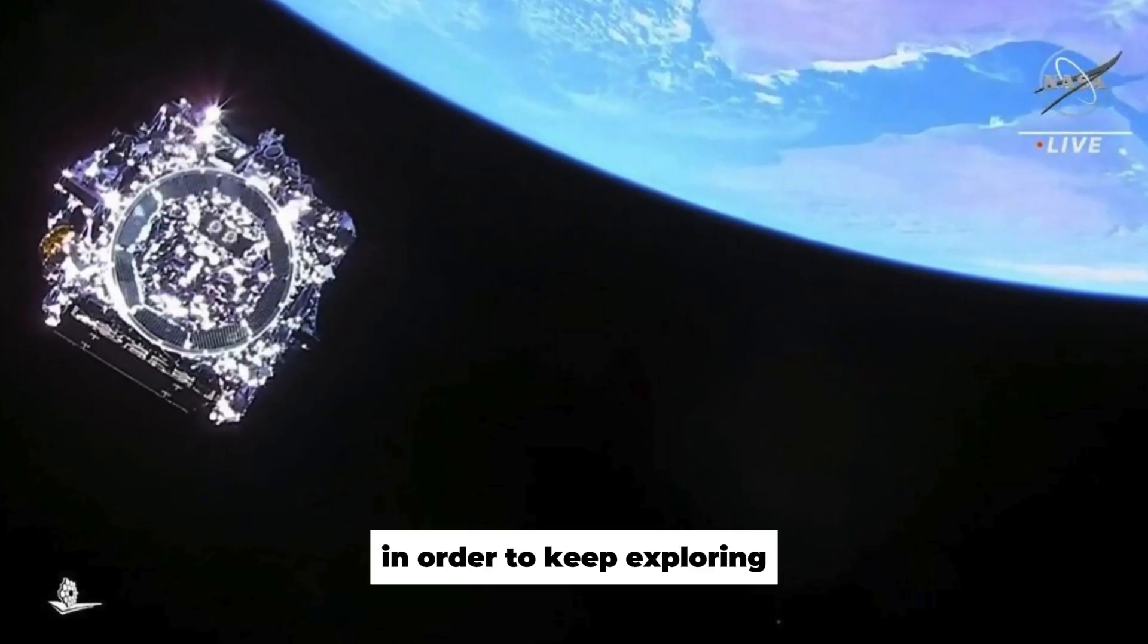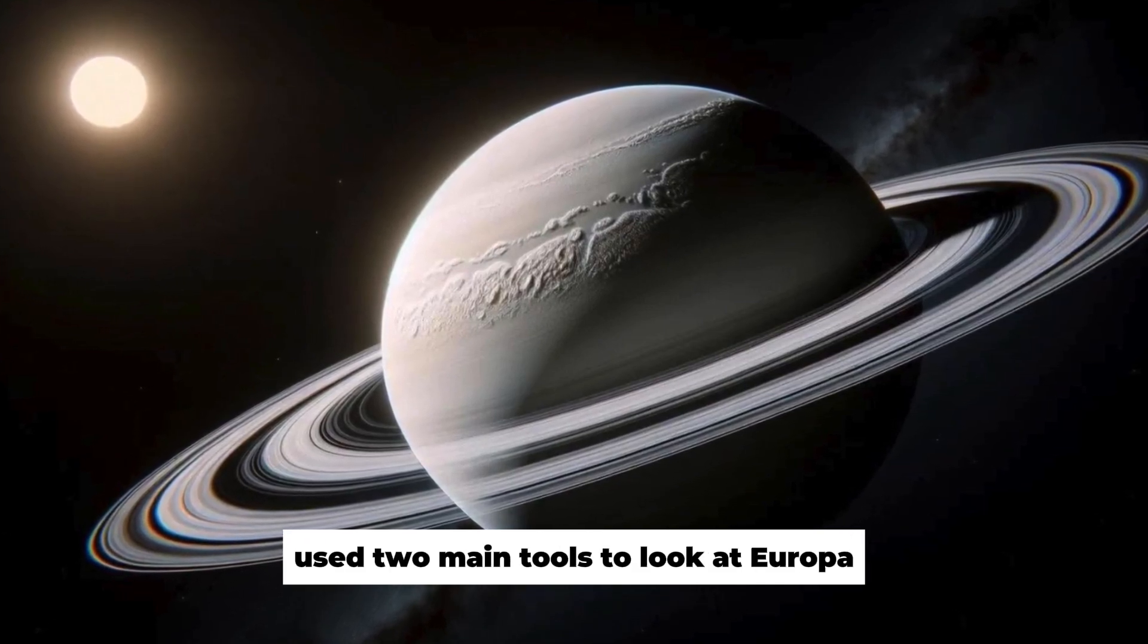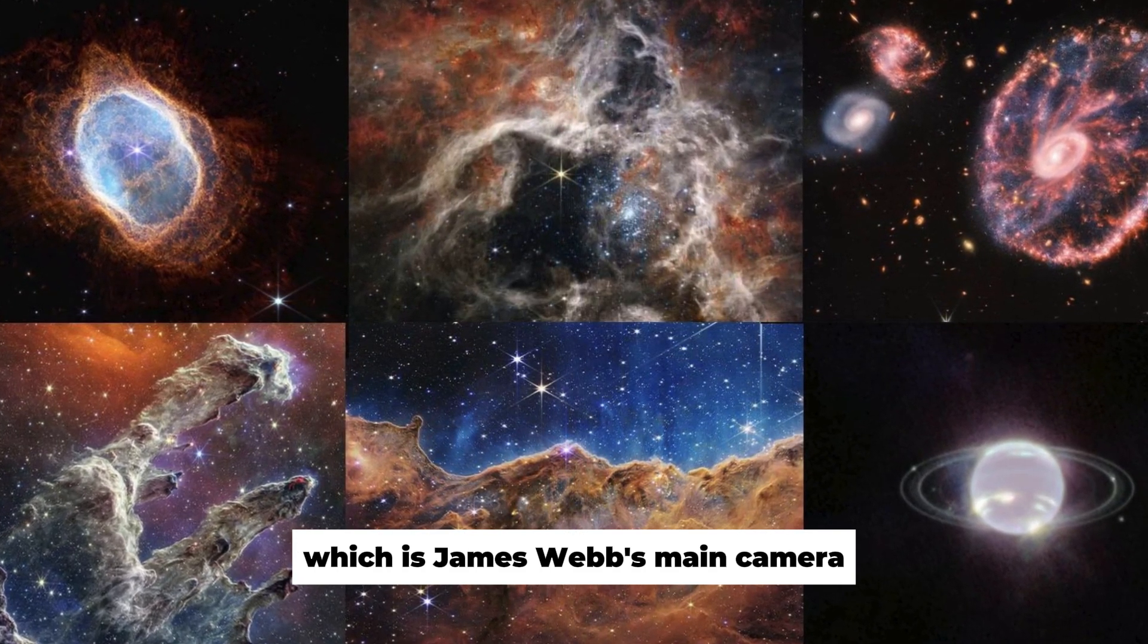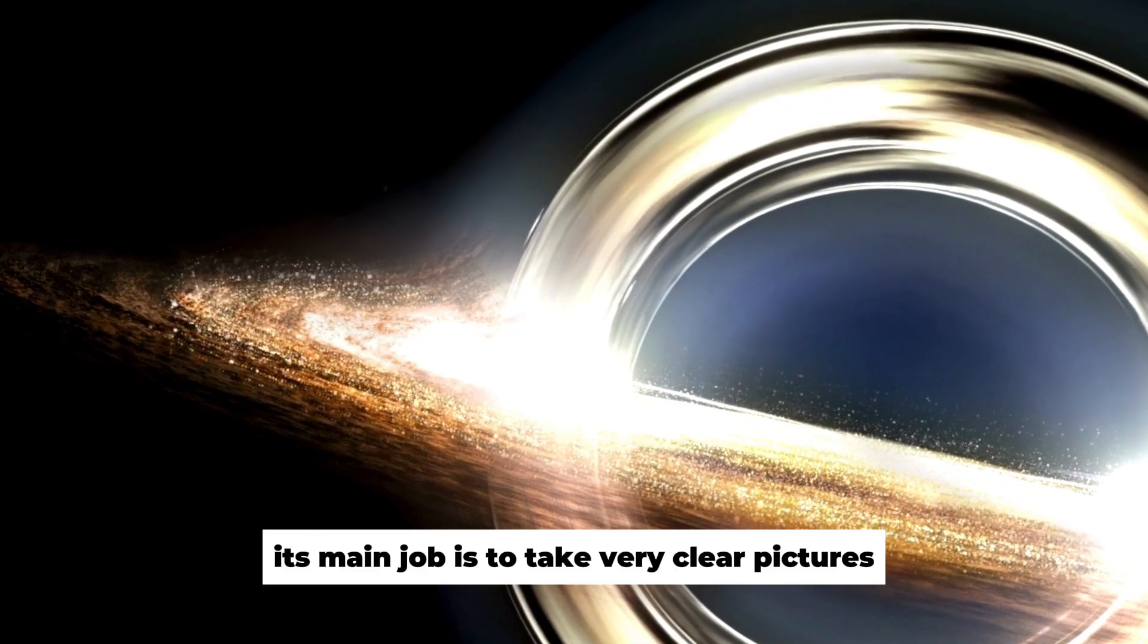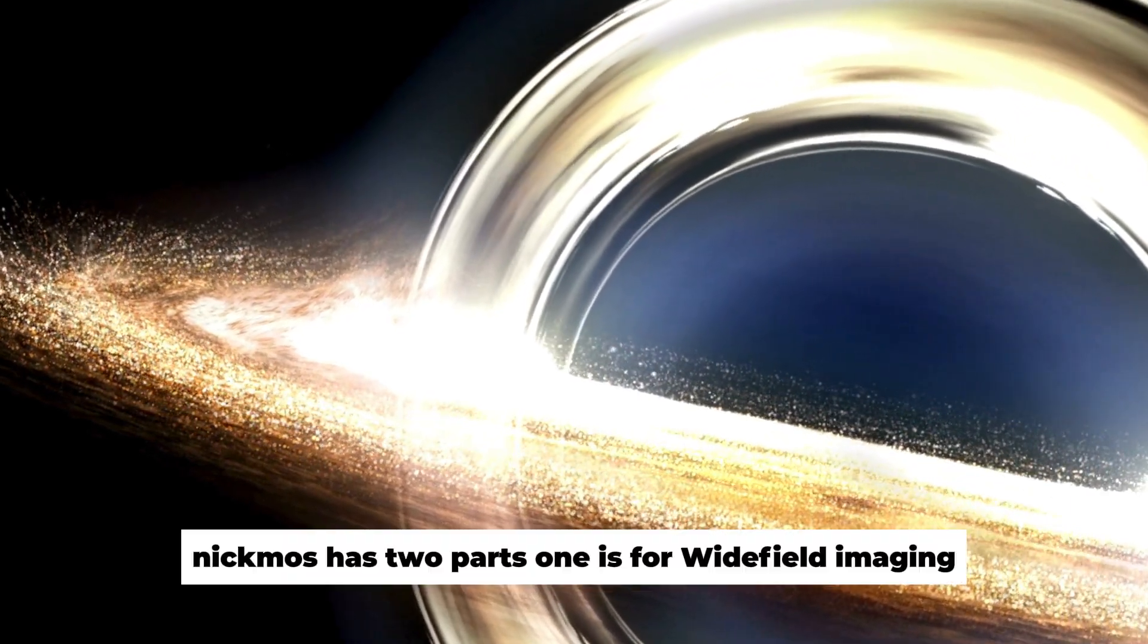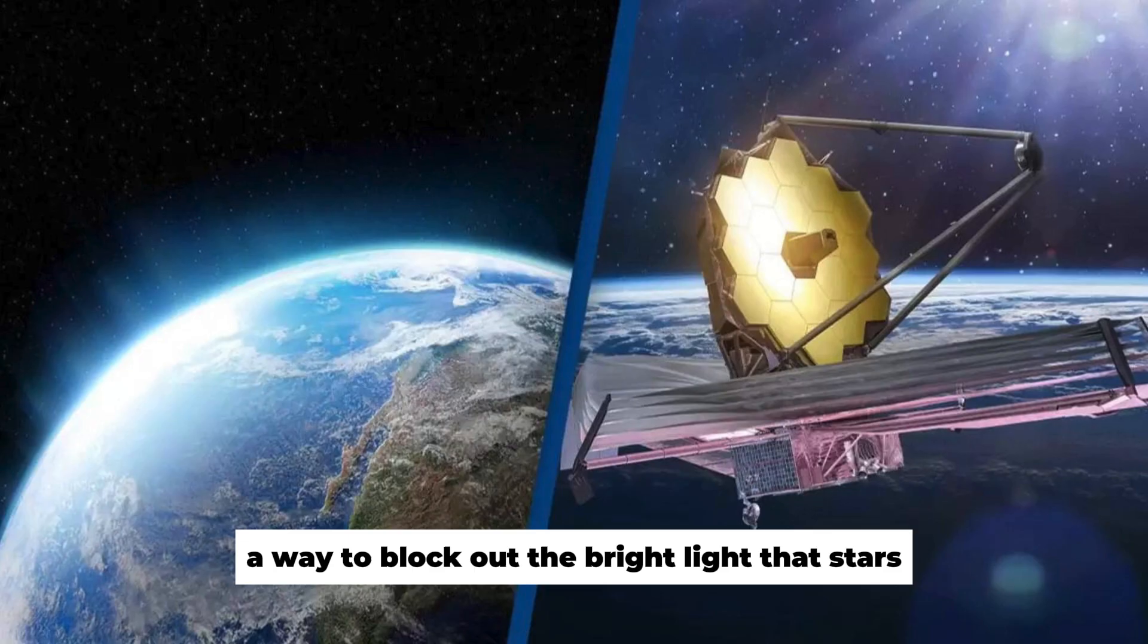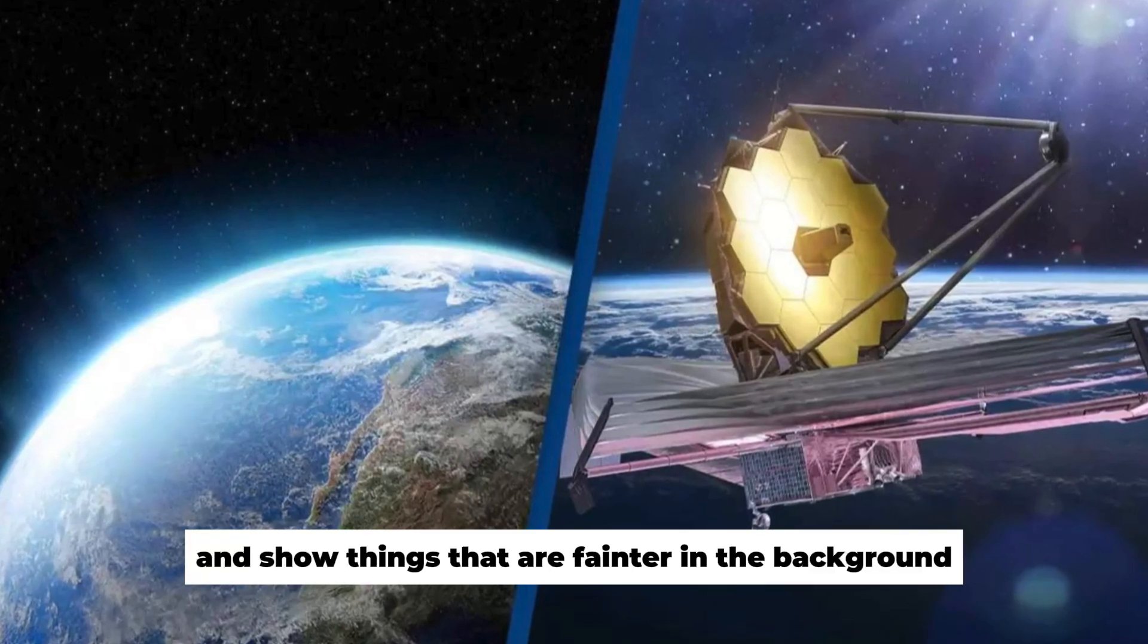In order to keep exploring, the James Webb Space Telescope used two main tools to look at Europa, NIRCAM and NIRSPEC. The Near Infrared Camera, NIRCAM, which is James Webb's main camera, is NASA's replacement for Hubble and Spitzer. Its main job is to take very clear pictures in the near-infrared range of light. NIRCAM has two parts. One is for wide-field imaging, and the other is for coronagraphy—a way to block out the bright light that stars and planets give off and show things that are fainter in the background.